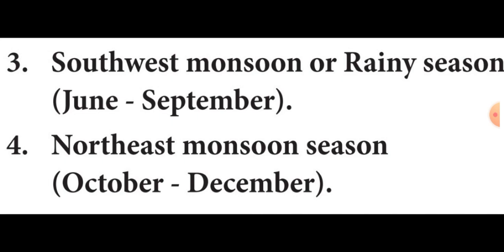The sudden approach of monsoon wind over south India with lightning and thunder is termed as the break or burst of monsoon. The monsoon wind strikes against the southern tip of the Indian landmass and gets divided into two branches.